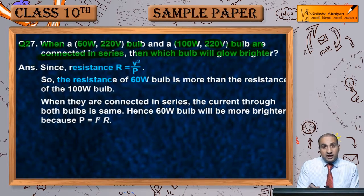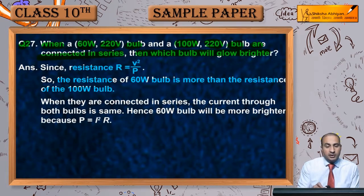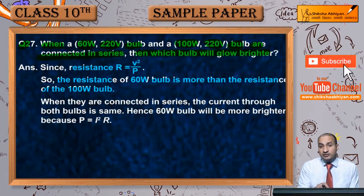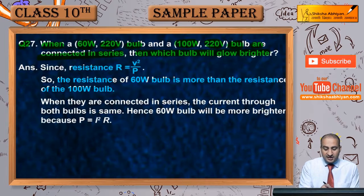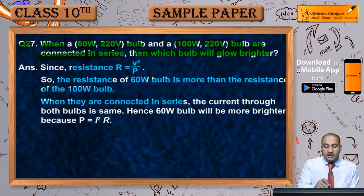The 60 watt bulb has more resistance, and the 100 watt bulb has less resistance — because resistance is inversely proportional to power. Now, when they are connected in series...